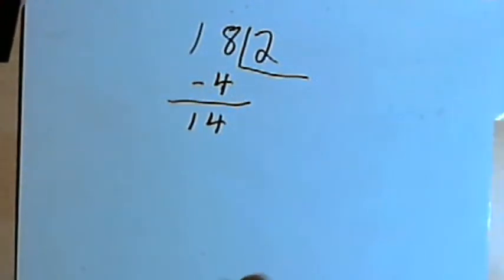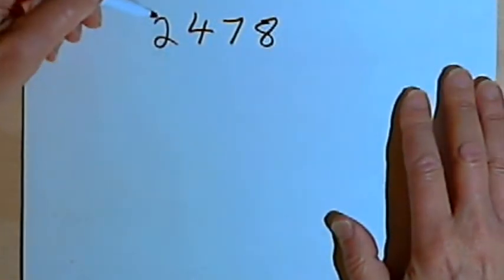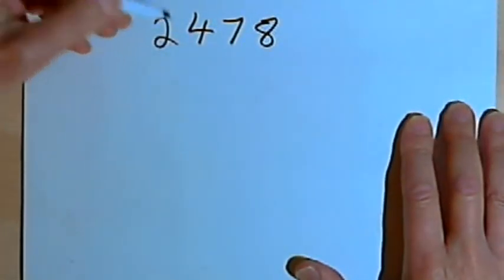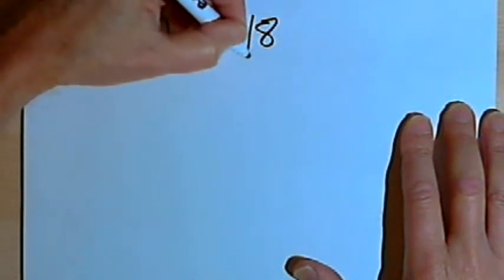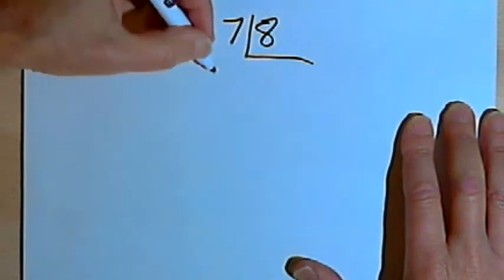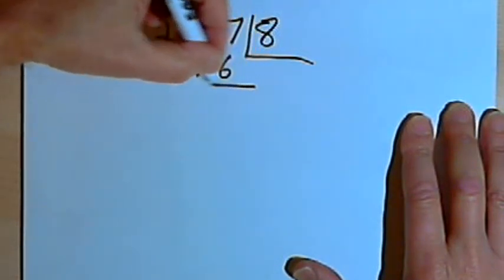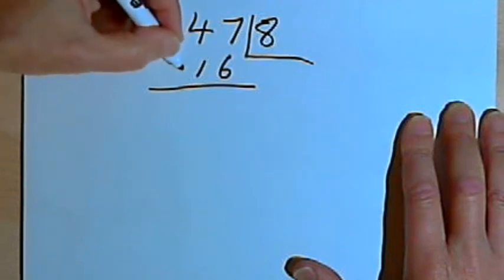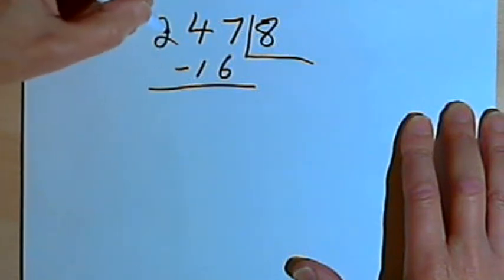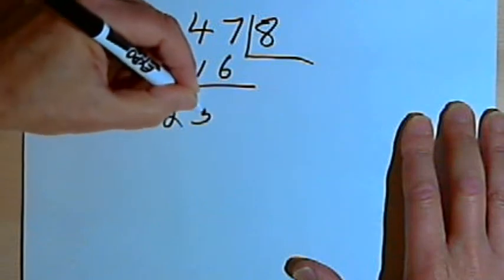Let's try this with a bigger number. Here's 2,478. I'm going to take the last digit, the 8, and multiply that by 2. So 2 times 8 is 16. I'll subtract that 16 from the other part of the number, the 247. 247 minus 16 is 231.